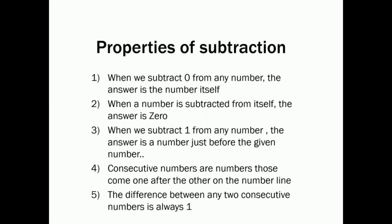Fourth property: consecutive numbers are numbers that come one after the other on the number line. For example, four and five are consecutive numbers because they come one after the other. Fifth property: the difference between any two consecutive numbers is always one.